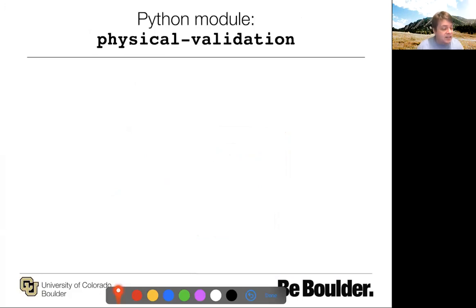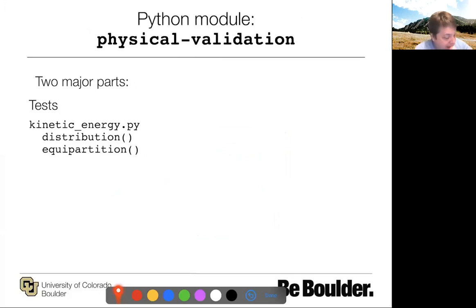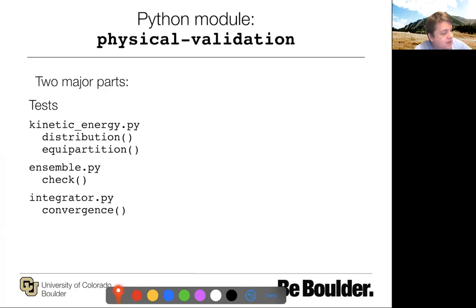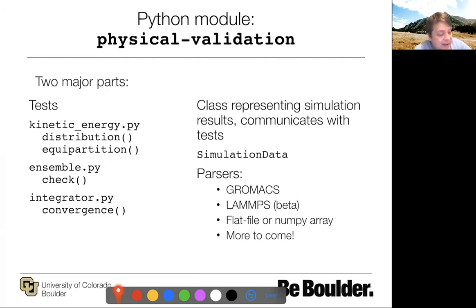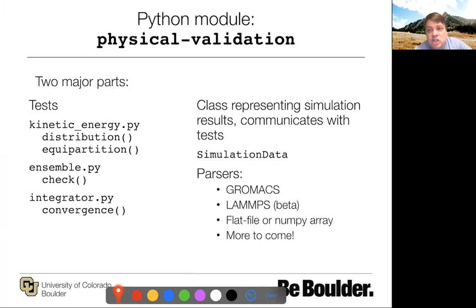The Python module 'physical_validation' has two major components: test_kinetic_energy.py, which has both a distribution test and an equipartition test; ensemble.py, which runs the ensemble check for different ensembles; integrator.py, which checks convergence as a function of time step; and a simulation data class that communicates with the tests. Importantly, there are parsers for GROMACS, LAMMPS, flat files, and NumPy arrays, with more to come. For virtually any code, you can already do a flat-file or NumPy array test by loading energies and volumes into arrays and passing them to the function. The equipartition test is the exception — it requires reading atomic velocities from trajectory files, so it's only implemented for a few cases.